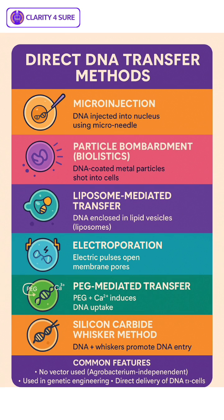Number five is PEG-mediated DNA uptake. PEG, or polyethylene glycol, induces fusion of DNA with protoplast membranes, promoting DNA intake. It's simple, cost-effective, and often used with electroporation. It's a chemical method widely used for in-vitro transformation.